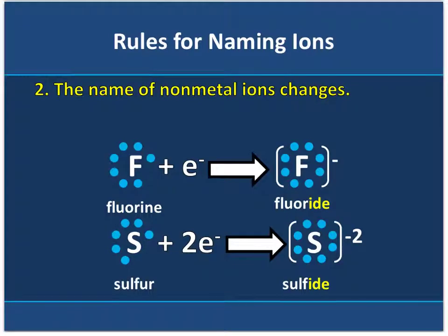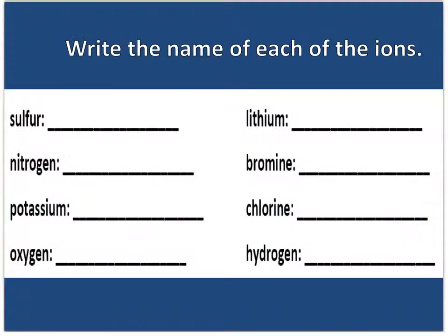Now, when we get to the non-metals, the name does change. Fluorine gains 1 electron to become the fluoride ion. Sulfur gains 2 electrons to become the sulfide ion. What we're doing here is taking off the -INE, or the -UR in this case for sulfur, and then we add the suffix -IDE. So we keep the root of the element name and add -IDE to it.